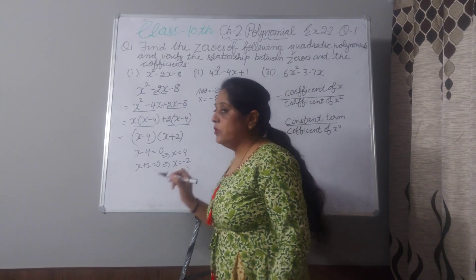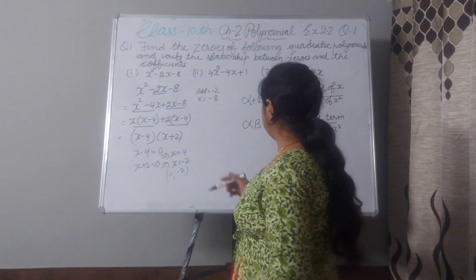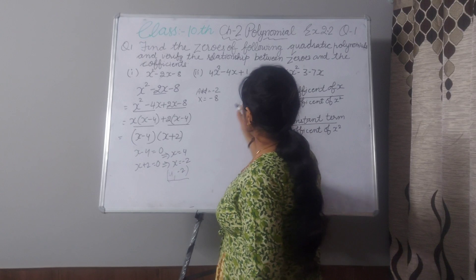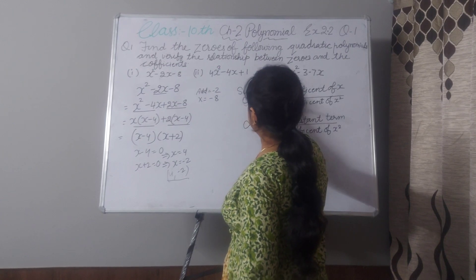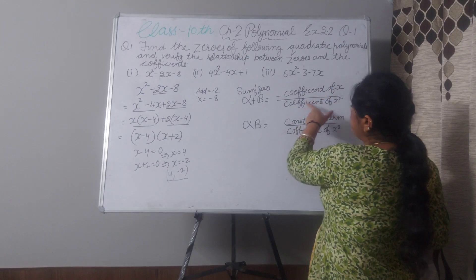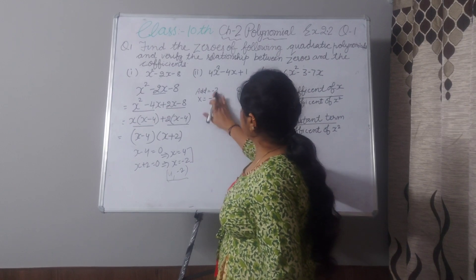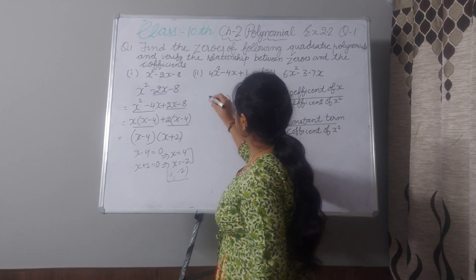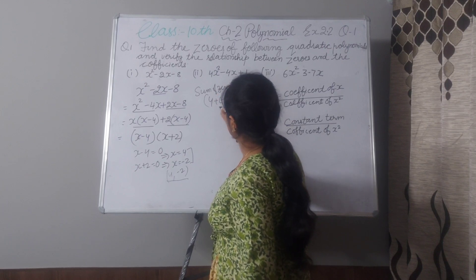Now we have to verify the relationship between the zeros and coefficients. The relationship is sum of zeros. We have two zeros — alpha and beta mean sum of zeros. First zero is alpha, second is beta. According to the formula, it is minus coefficient of x divided by coefficient of x². From our factors, sum of zeros is 4 plus (minus 2) equals 2.